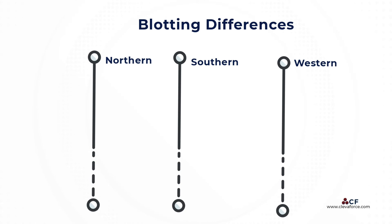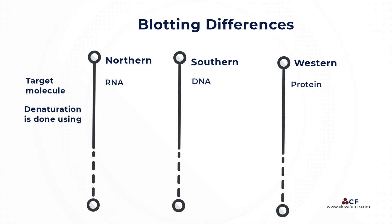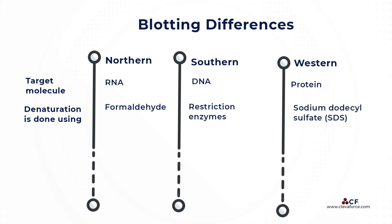The substances to be identified — the target molecules — differ across blotting techniques. In northern blotting, the target is RNA; in southern blotting, it is DNA; and in western blotting, it is proteins. Denaturation of the target molecule is done using formaldehyde in northern blotting, restriction enzymes in southern blotting, and sodium dodecyl sulfate (SDS) in western blotting.